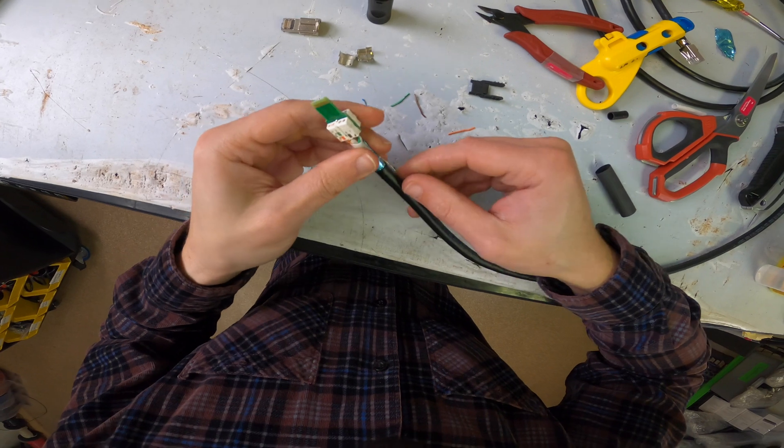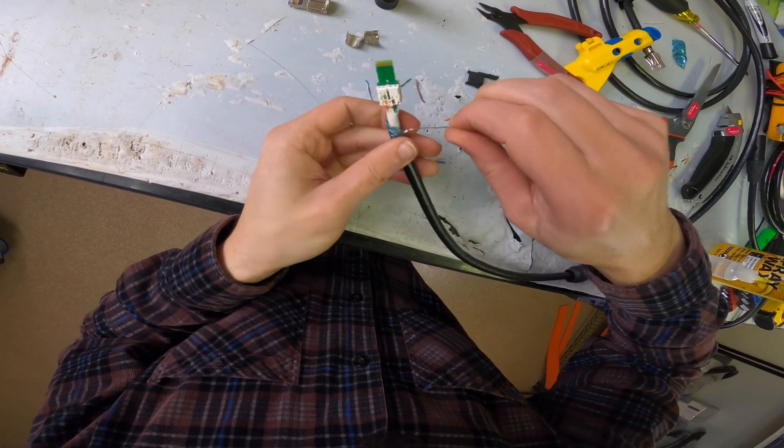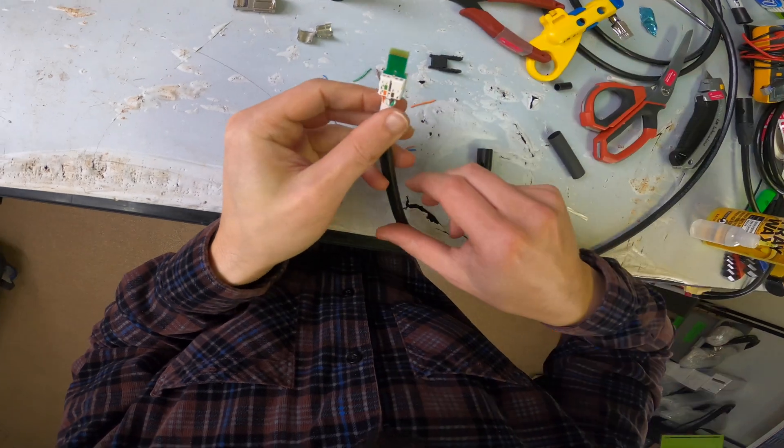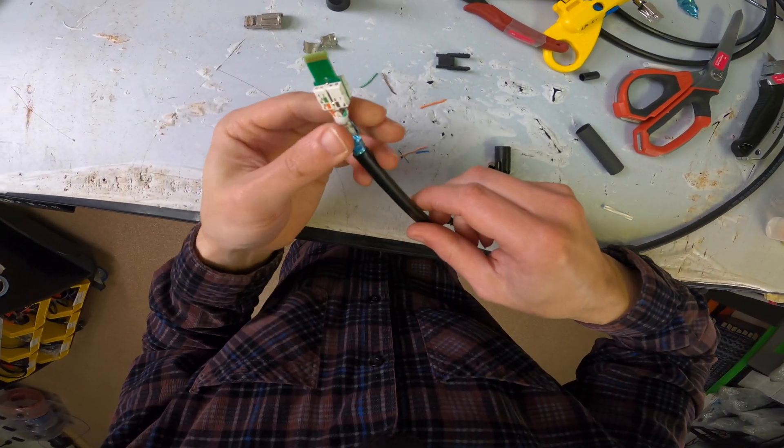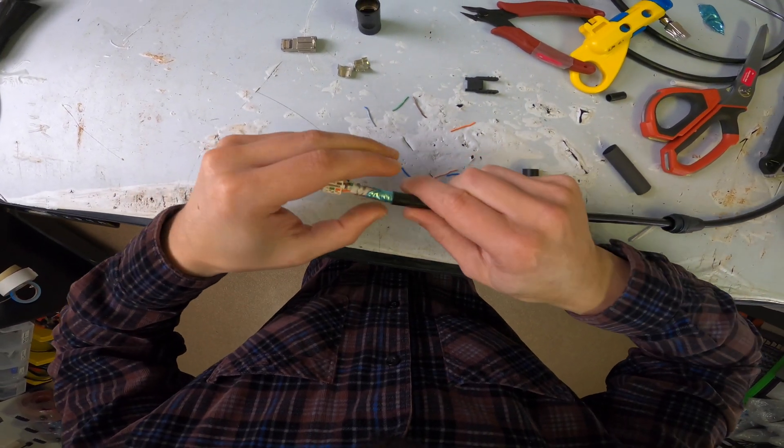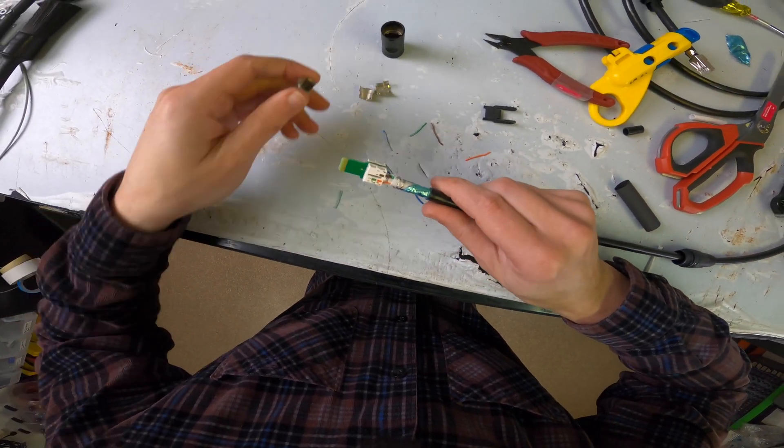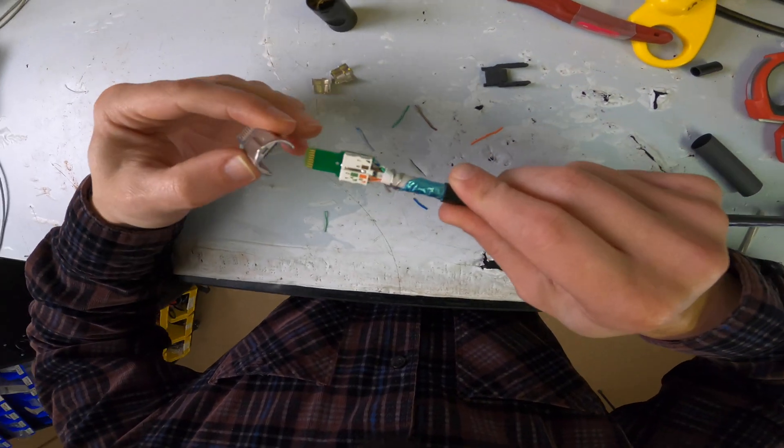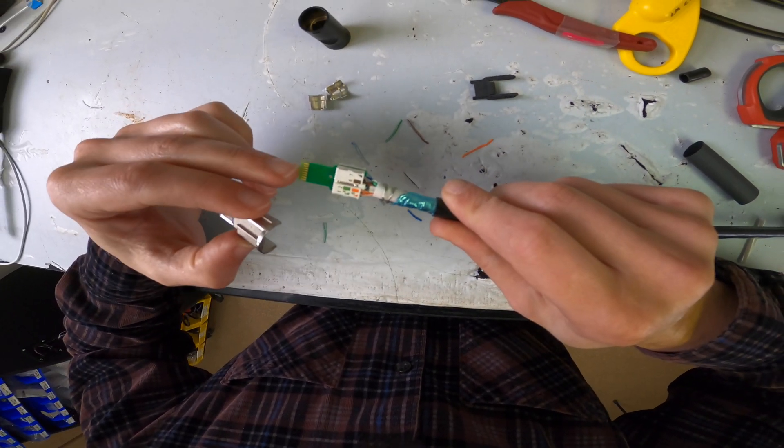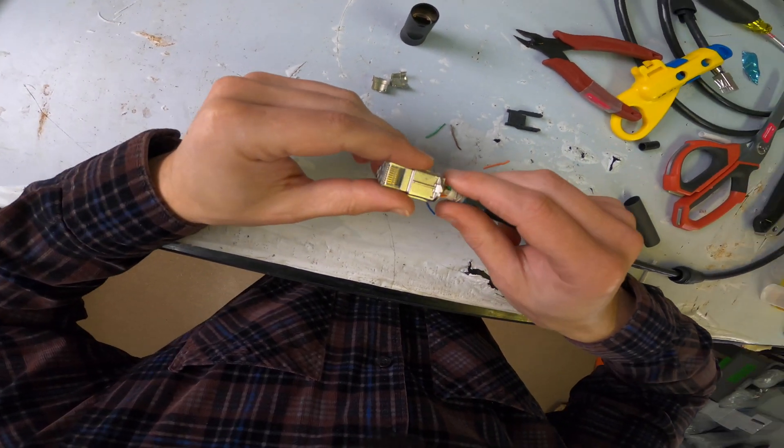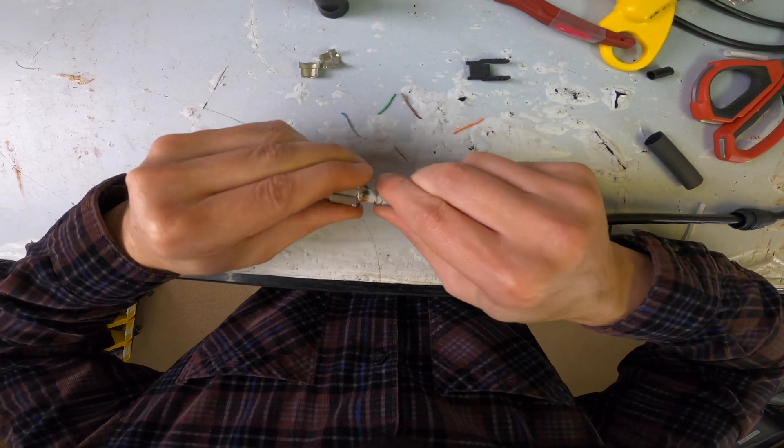Now you want to take your ground wire and just wrap it. You just want to wrap it around the inner jacketing like this. Okay. And now you're just going to insert this part just like this. Just making sure that the leads on the PCB are matching the leads in the chassis. And then that'll go in just like that.